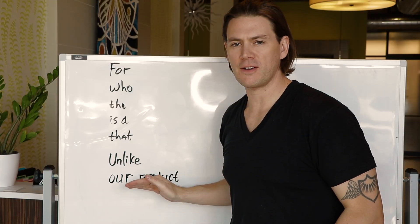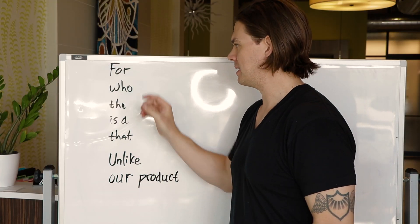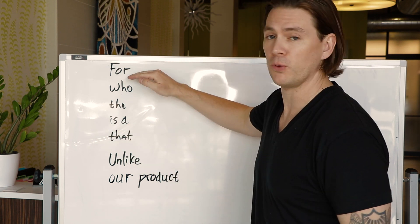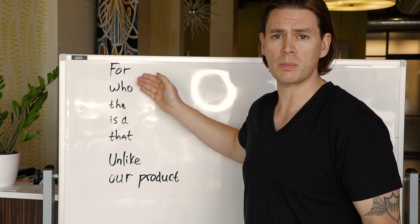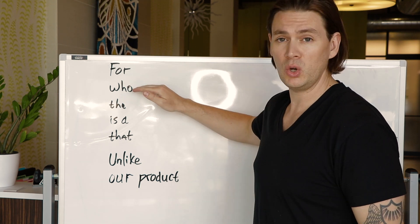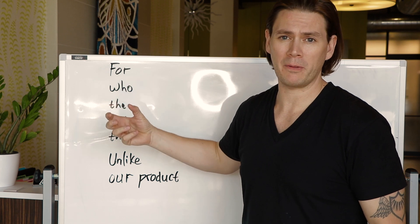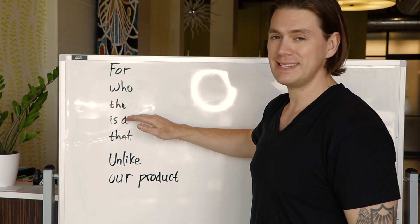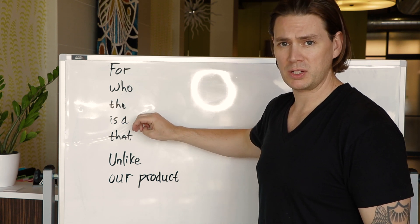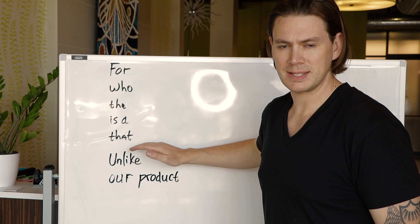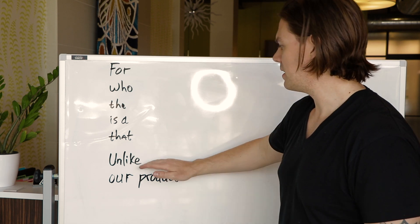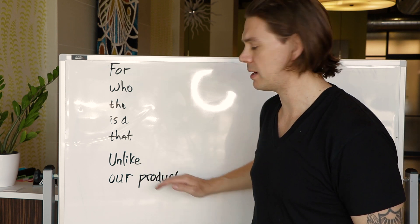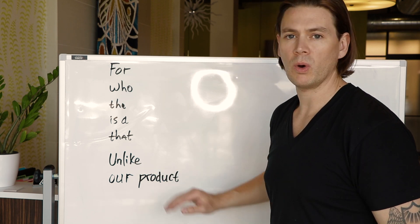It's pretty simple. You basically start off with a few of these words, and they get a different part of your elevator pitch going. So we start with 'for,' which describes who your product is for. 'Who,' which is a little bit more about that customer. 'The,' 'is a' describes what your product is. 'That,' what it does. And finally 'unlike,' where you're going to start differentiating your product from your competitors.